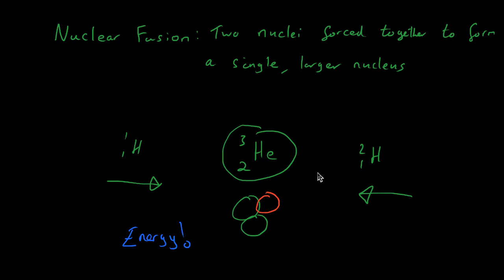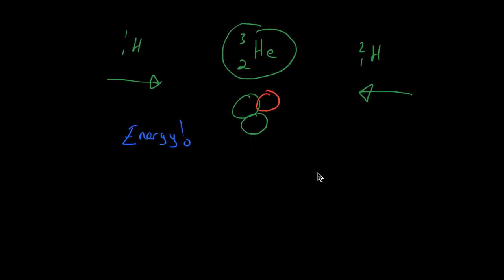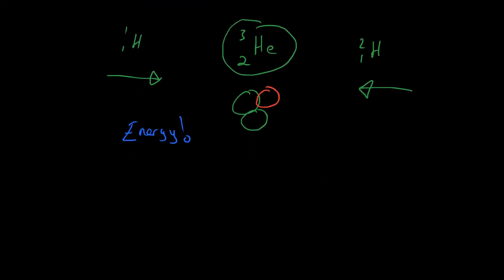This process is what occurs in stars. So it occurs in stars. Stars obviously includes our sun. In the sun, the sun is constantly combining hydrogens together to form helium. Now, it doesn't mean that only hydrogen can react in this way. Other elements can as well.